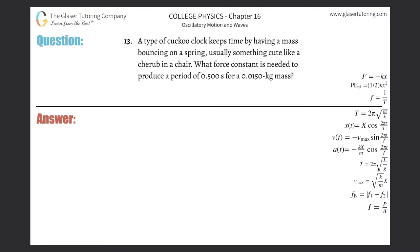Number 13: A type of cuckoo clock keeps time by having a mass bouncing on a spring, usually something cute like a cherub in a chair. What force constant is needed to produce a period of 0.5 seconds for a 0.015 kilogram mass? Alright, so anytime we have oscillatory movement or a spring bouncing up and down...